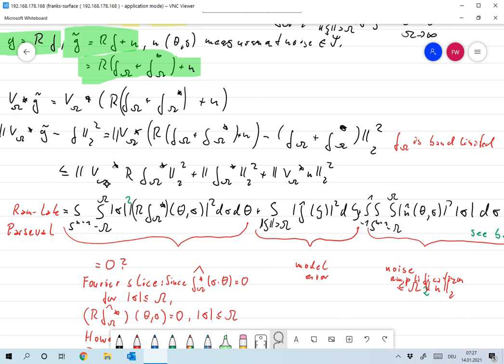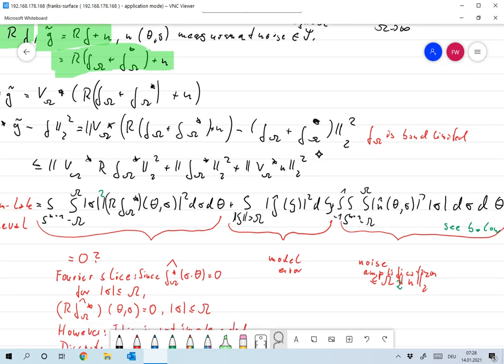I'm left with three error terms. The first one is v_omega star Rf_omega star Euclidean norm squared, plus norm f_omega star squared, plus the amplification of the noise.